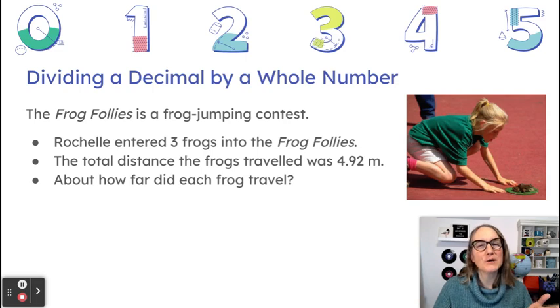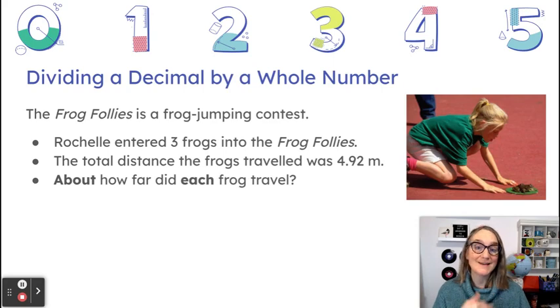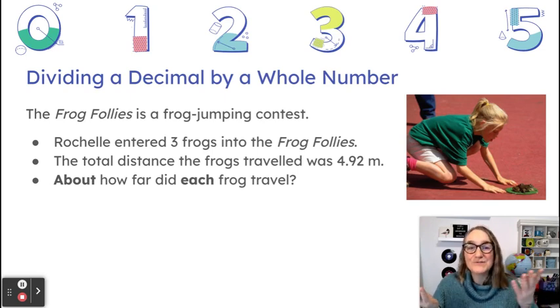What do we need to do to solve this problem? Pause for a moment and think if you can come up with a strategy. Let's start by asking ourselves what the question's asking, and that last bullet point there kind of says it all. About how far did each frog travel? Now that sentence also has some clue words in it. Can you see any clue words in there? Take a moment to think about it and see if you can identify them. I noticed two clue words in that sentence, and those clue words are about and each.